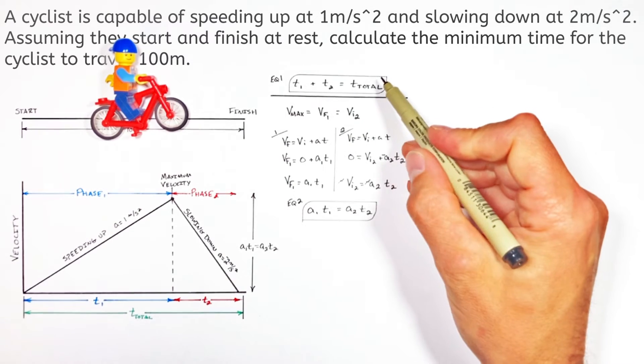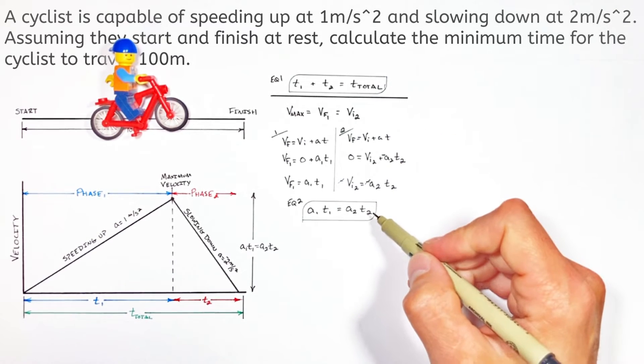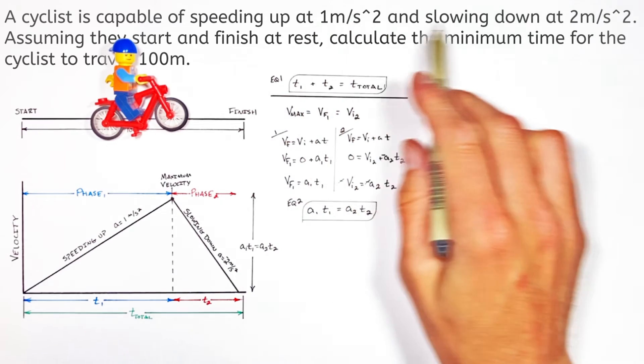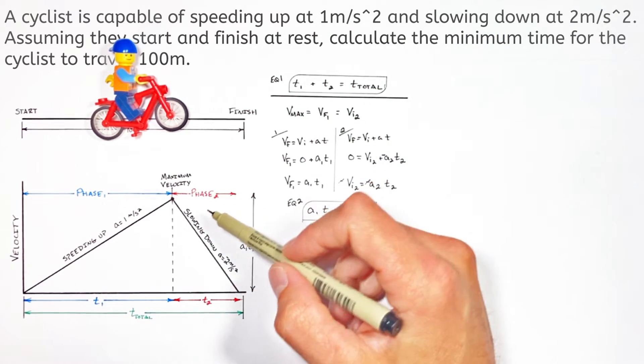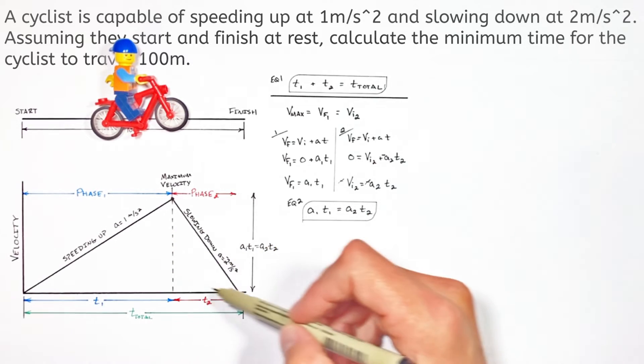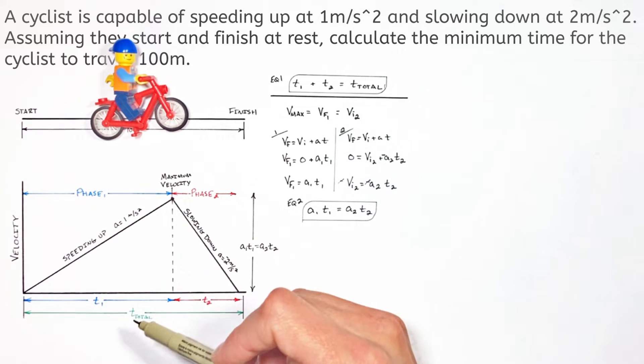So we've used both time and acceleration to generate equations, but we haven't used the displacement that was given in the problem. So going back to the graph, the area under the curve of a velocity versus time graph is equal to displacement.